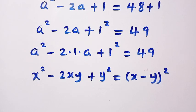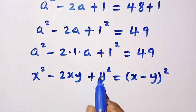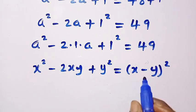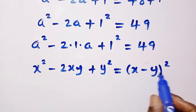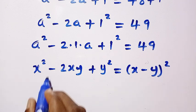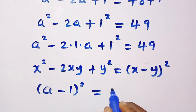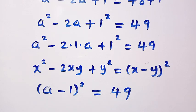And if our x here is a and our y here is 1, we are going to replace it so that we have something of x minus y all squared. As this one becomes a minus 1 all squared equals 49.